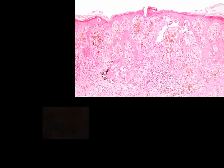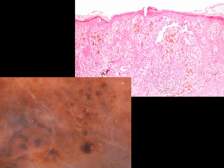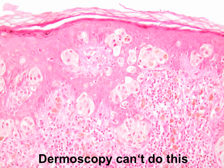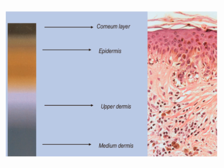In histopathology, you see even single cells. In dermoscopy, you see globules, which means clusters of cells — so you don't see the single cells. Dermoscopy cannot show you single cells, but it can show you the cell clusters and the distribution of cell clusters.